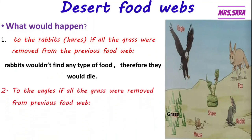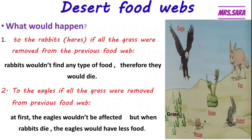What would happen to the eagles if all the grass were removed from the food web? At first, the eagles wouldn't be affected. But when the grasses are removed, the rabbits can't find food and would die. Then the snakes wouldn't find their food and would die. Also the fox wouldn't find their food and would die. So the eagles would have less food.